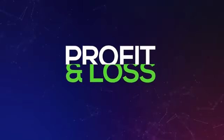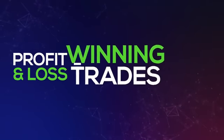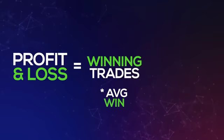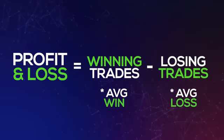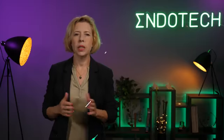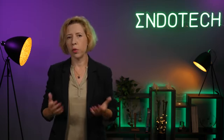This is enough to make a winning strategy, and let's see why. Profit and loss equals the number of winning trades multiplied by the average profit of the winning trades, minus the number of losing trades times the average loss of the losing trades. If 66% accuracy is reached and the average win-loss ratio is sufficiently small, the strategy will be profitable and quite stable.